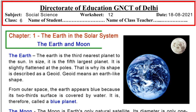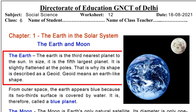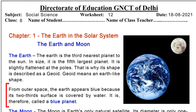The Earth and Moon. Earth is the third nearest planet to the Sun, and the fifth largest planet in size. It is slightly flattened at the poles — north-south — and that is why its shape is described as a geoid.